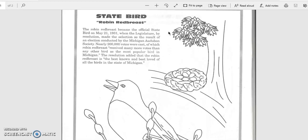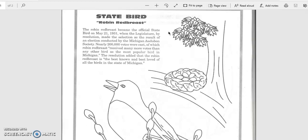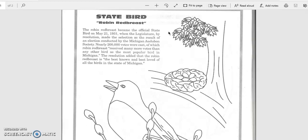The Robin Redbreast became the official state bird on May 21, 1931, when the legislature, by resolution, made this election as the result of an election conducted by the Michigan Audubon Society. Nearly 200,000 votes were cast, of which Robin Redbreast received many more votes than any other bird as the most popular bird in Michigan. The resolution added that the Robin Redbreast is the best known and best loved of all the birds in the state of Michigan.